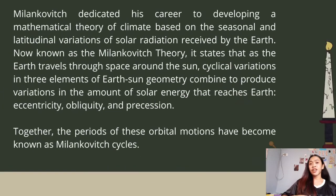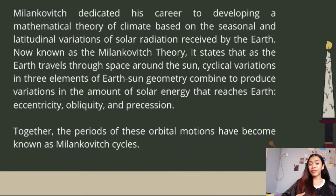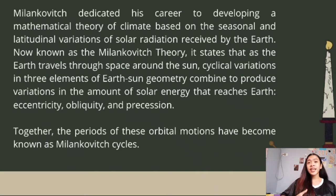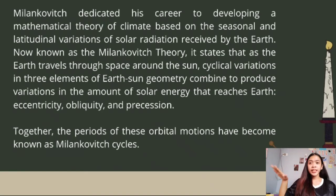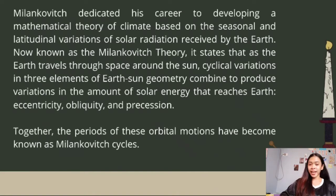Milankovitch dedicated his career to developing a mathematical theory of climate based on the seasonal and latitudinal variations of solar radiation received by the Earth, now known as the Milankovitch theory. It states that as the Earth travels through space around the Sun, cyclical variations in three elements of Earth-Sun geometry combine to produce variations in the amount of solar energy that reaches Earth: eccentricity, obliquity, and precession. Together, the periods of these orbital motions have become known as Milankovitch cycles.